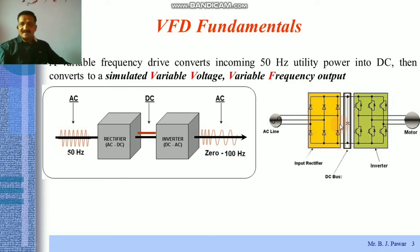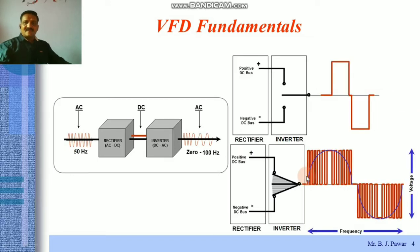Here the converter, that is rectifier, is shown as uncontrolled, that is by using diodes, so that the obtained DC is stored over here which is titled as a DC bus. And that DC bus voltage available is applied as an input to this three-phase inverter. Correct? So that was the simple mechanism of that VFD. We can call it as VVVFD, that is variable voltage variable frequency driver.